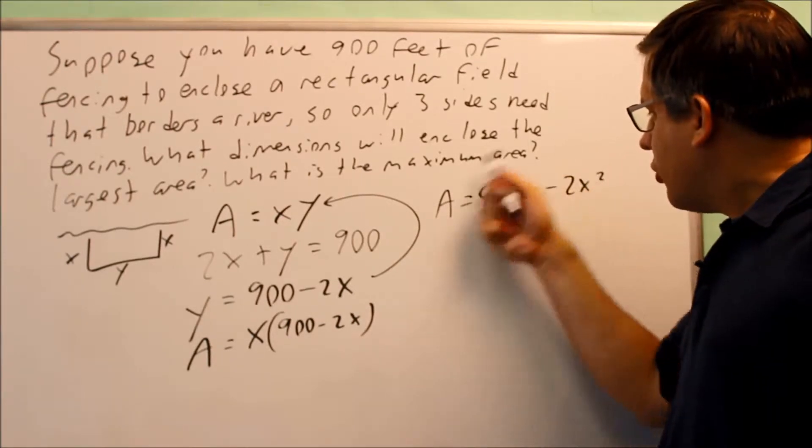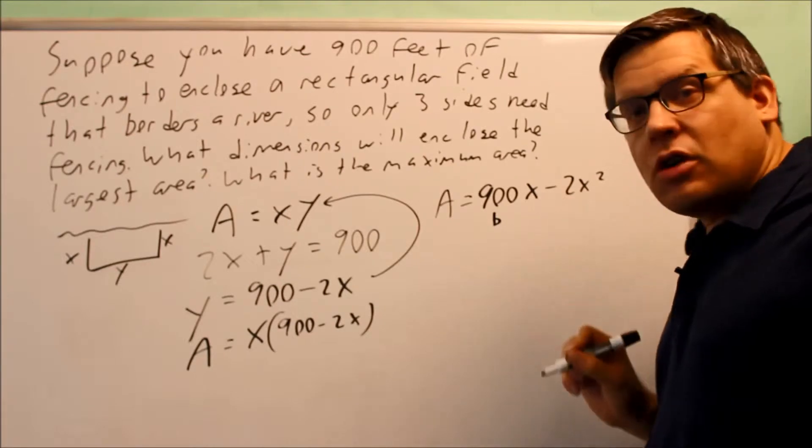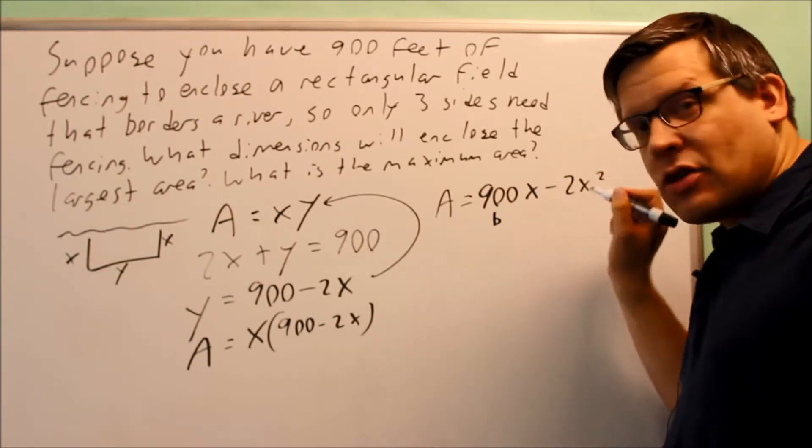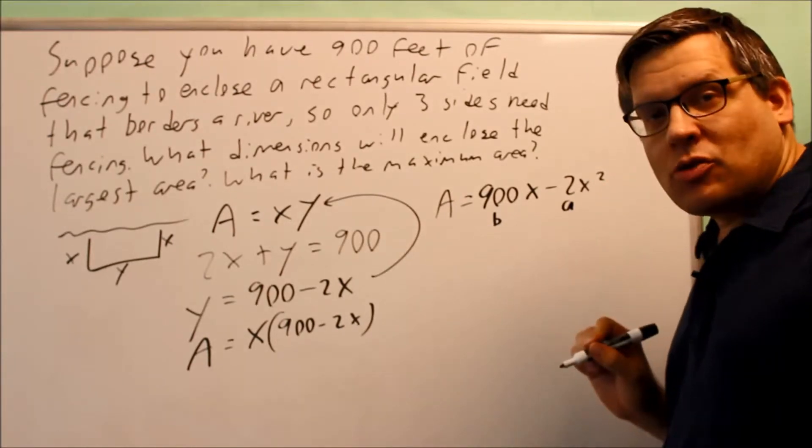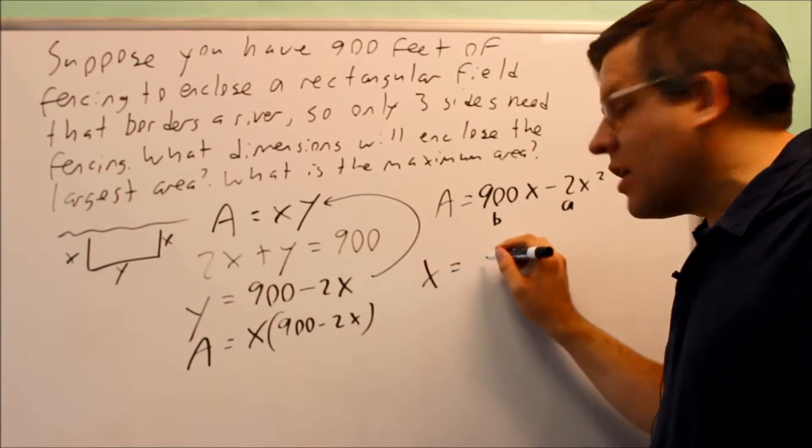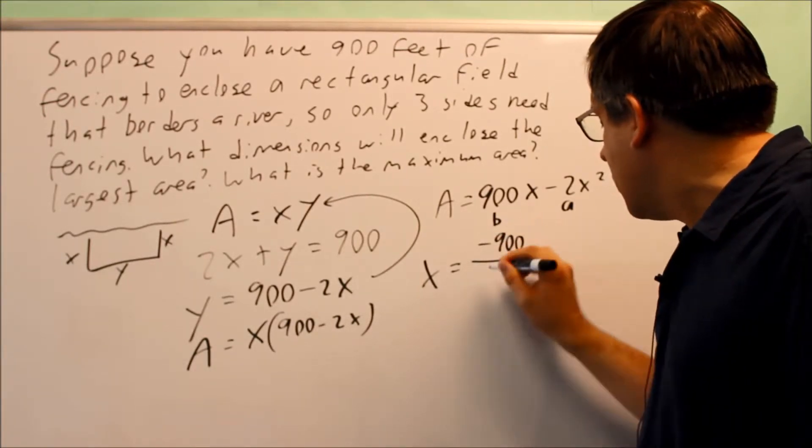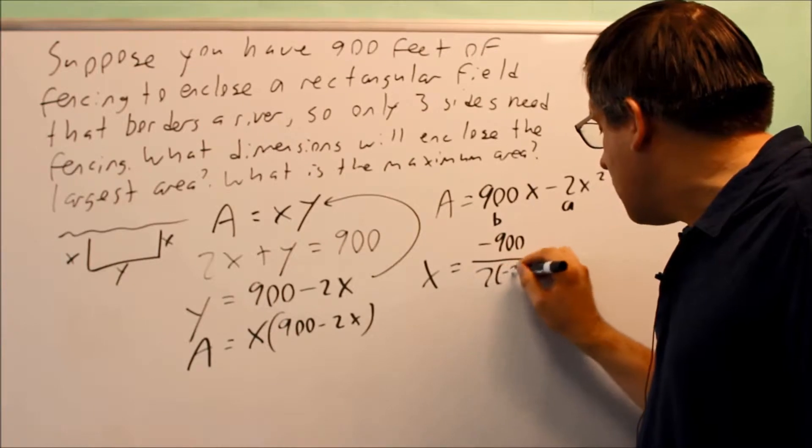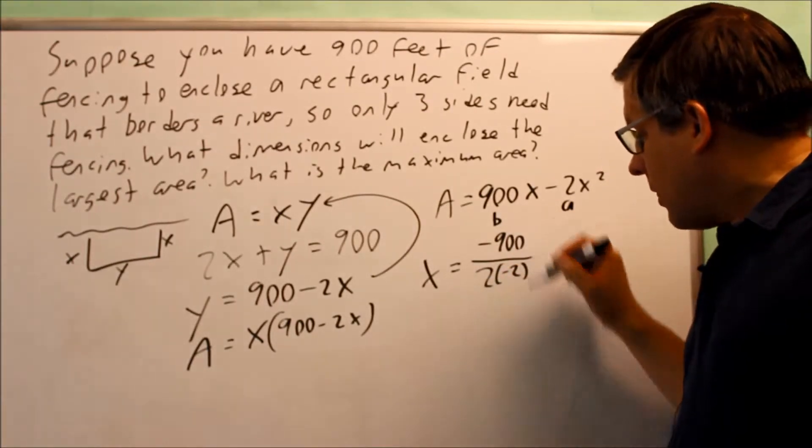When you label this, you've got to be careful. Your b is going to be in front of the x term without the square. Your a has to be the one in front of the square term. So be careful when you put those numbers in.